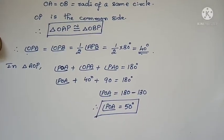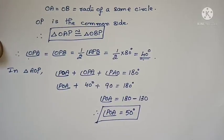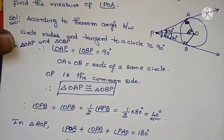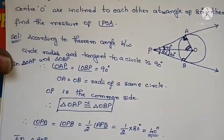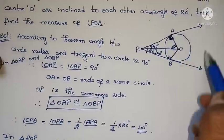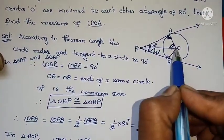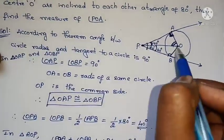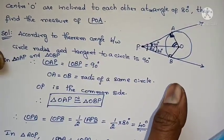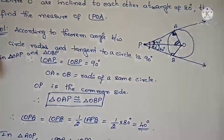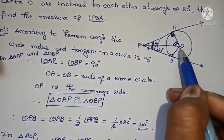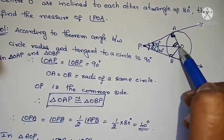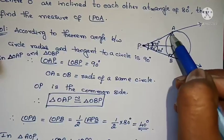This problem is very simple and important — it appears in last year's question papers. There is a circle with center O and an external point P with two tangents PA and PB. OP is the common side, OA equals OB as two radii. The radius meets the tangent at 90 degrees at both points.